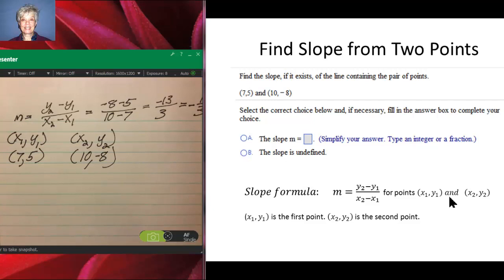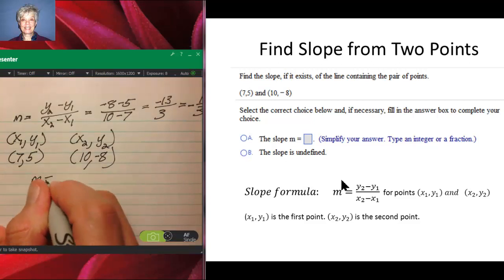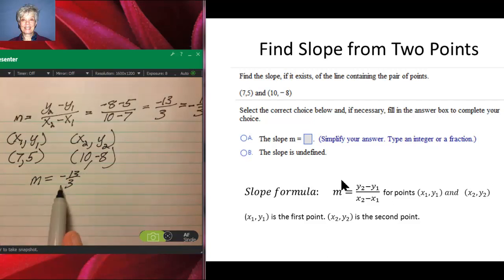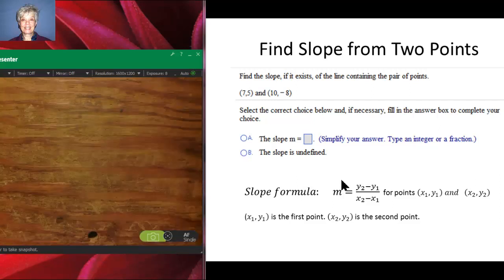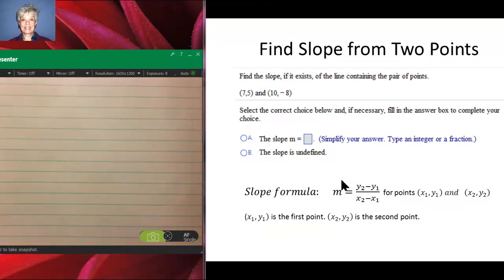This is just a copy of the problem that's on MyMathLab. So once we have the answer that m equals -13/3, we can move on. All right, this is going to be a line that tilts to the left. Let's go on.